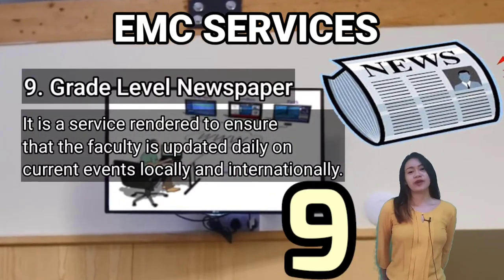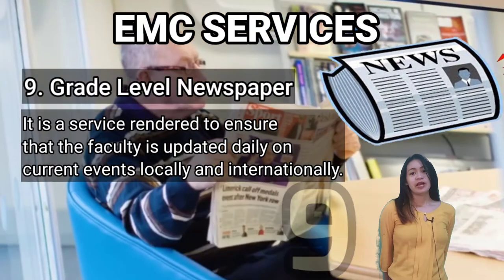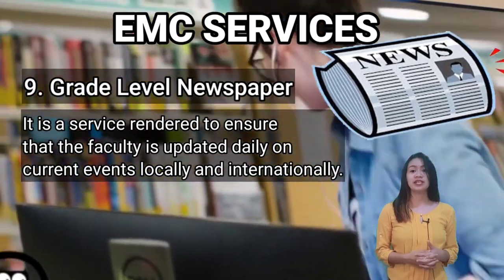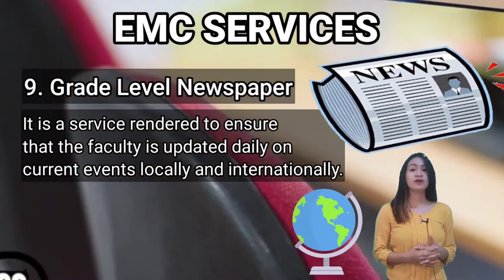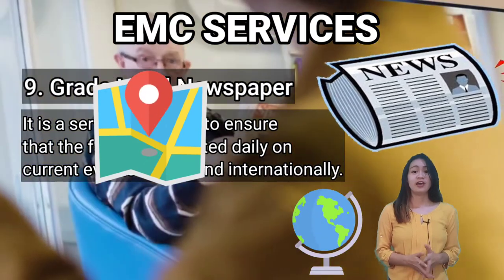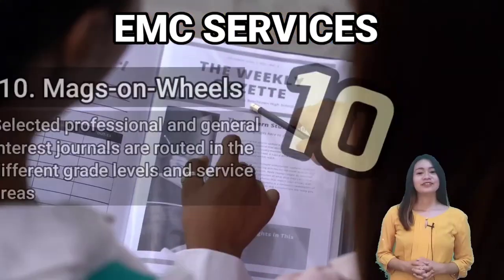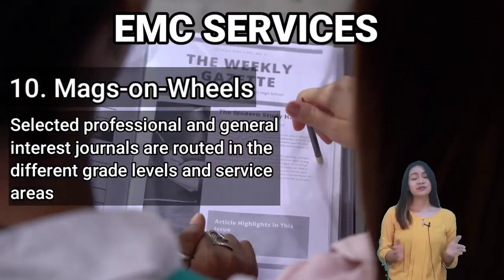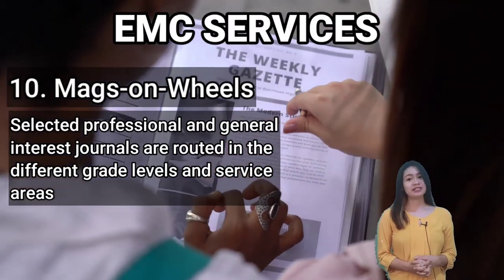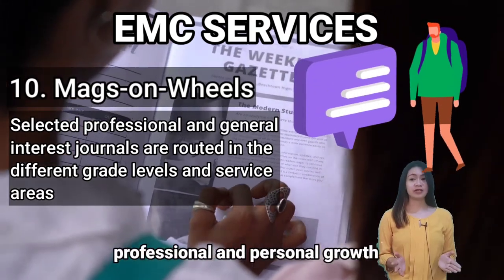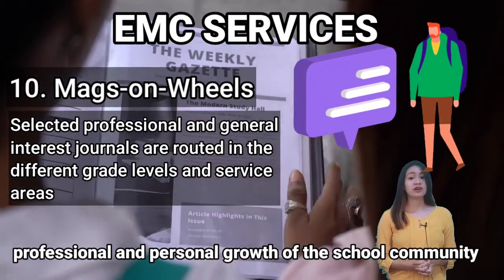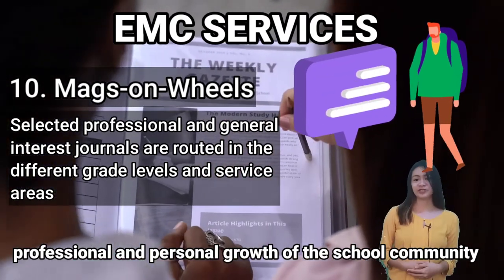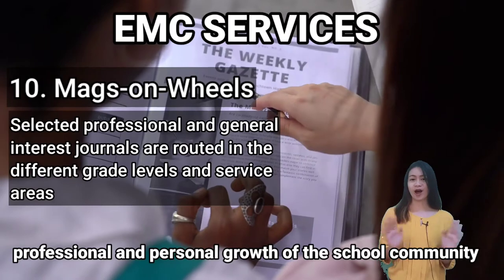Number 9: Grade Level Newspaper. This is a service rendered to ensure that the faculty is updated daily on current events locally and internationally. Each grade level is given a subscription. Number 10: Mags on Wheels. This helps students stay updated on information about subject areas. It provides access to a large borrowed journal collection covering areas such as economics, literature, politics, and so on.